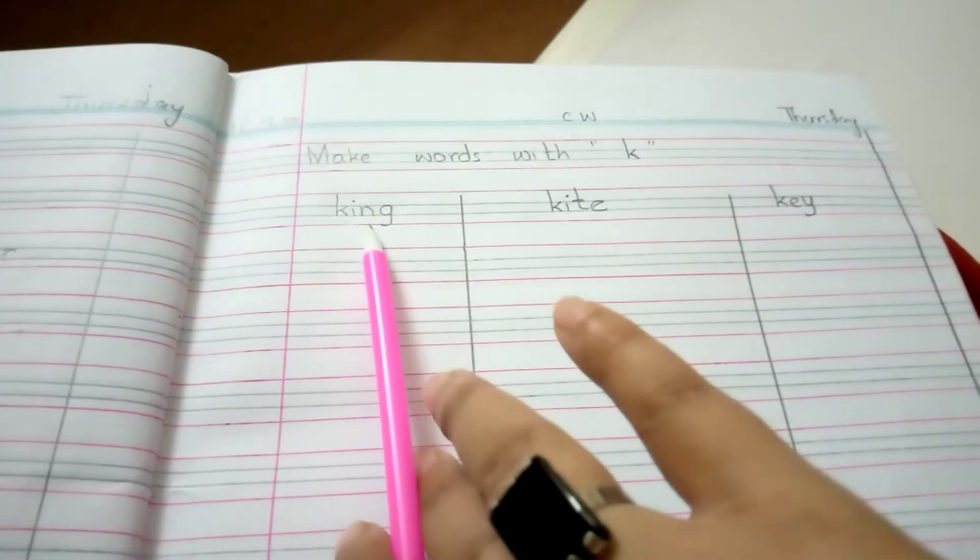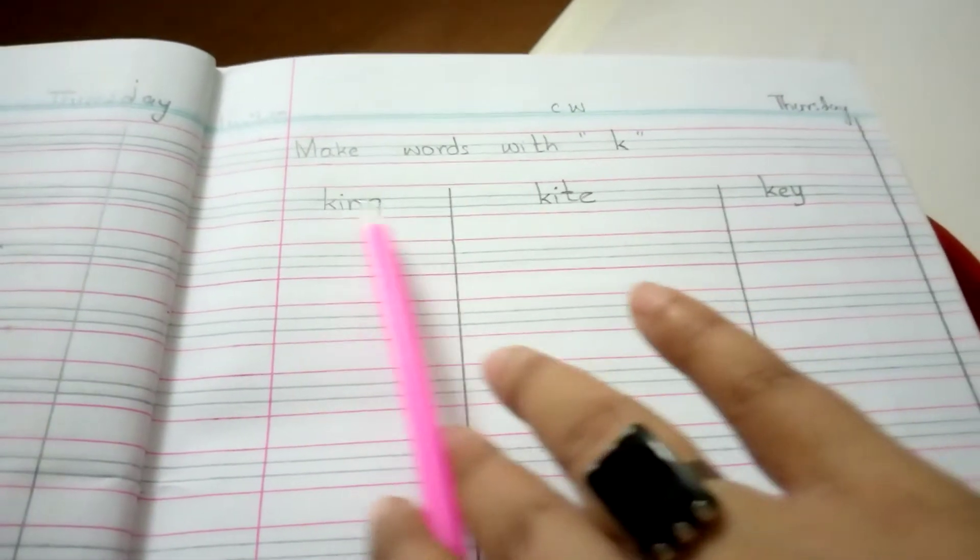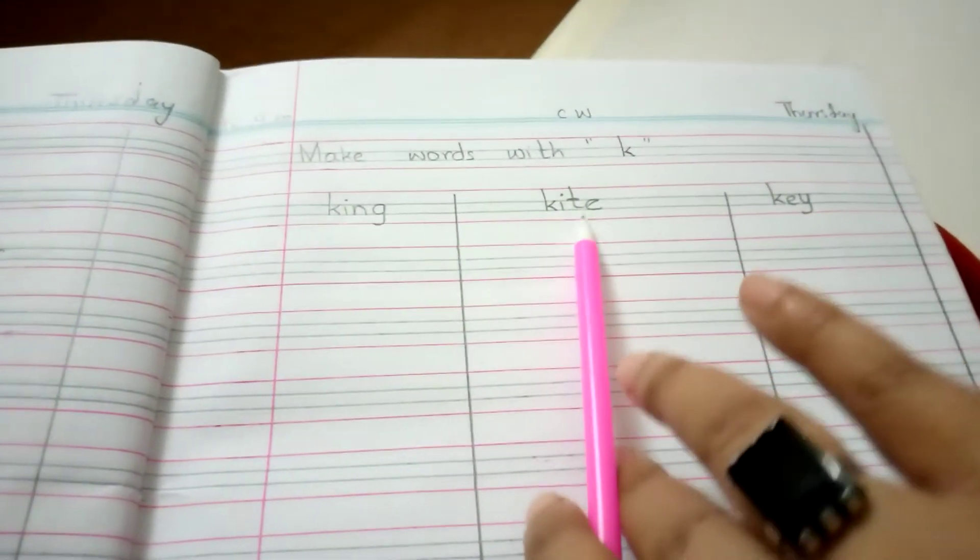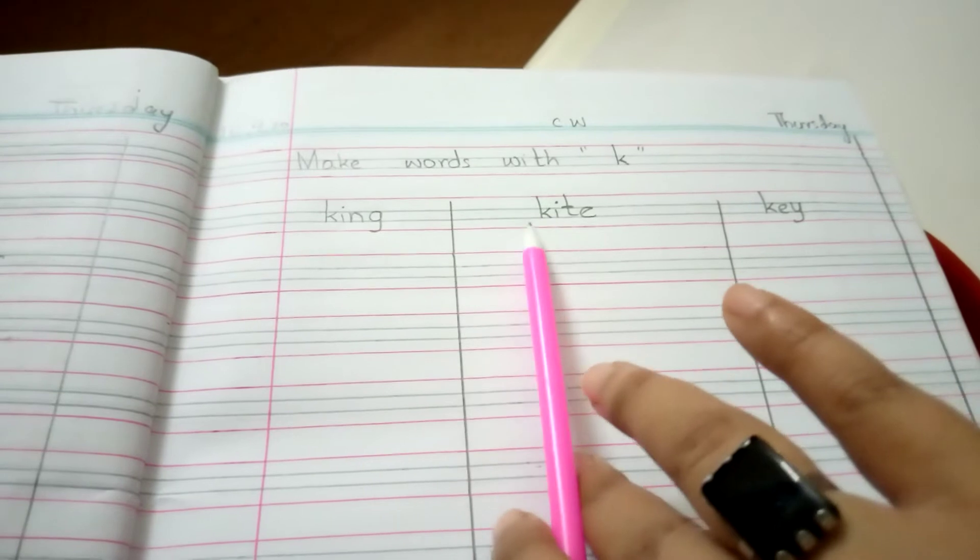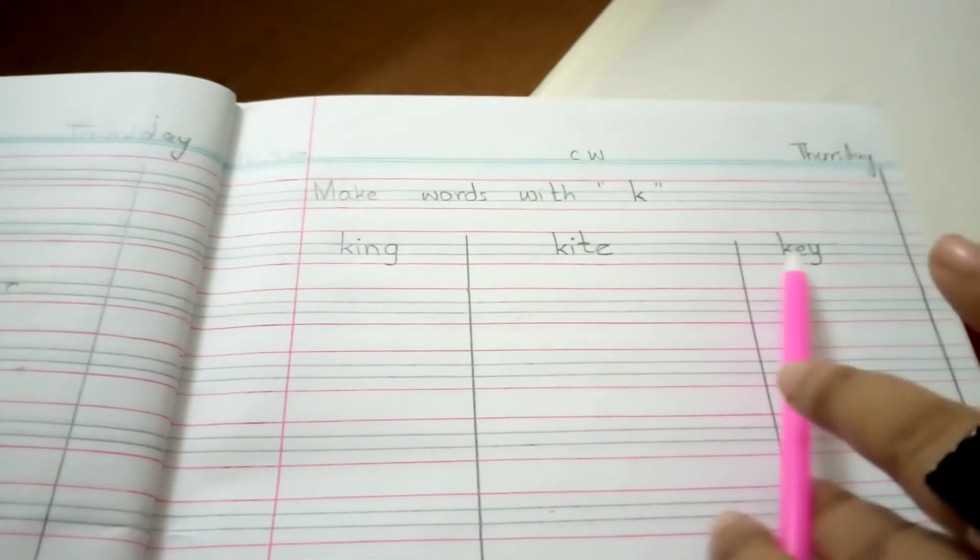King. K-I-N-G. King. Kite. K-I-T-E. Kite. K-E-Y. Key.